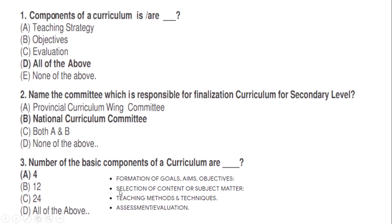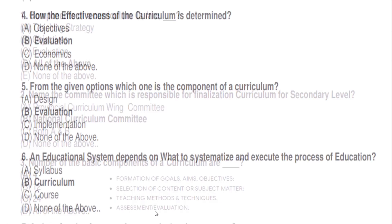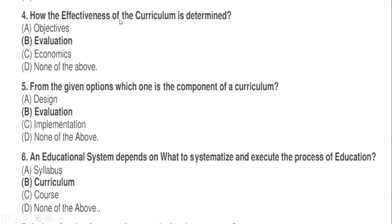The four basic components of curriculum are: (a) formation of goals, aims and objectives; (b) selection of content or subject matter; (c) teaching methods and techniques; (d) assessment and evaluation — how the effectiveness of the curriculum is determined. Correct option: B — evaluation.